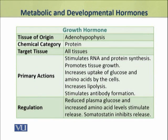The major developmental hormone of the body is growth hormone, which is secreted by the anterior pituitary — the adenohypophysis. It is a protein hormone and it targets almost all tissues of the body. It also increases the uptake of glucose and amino acids by the cells.